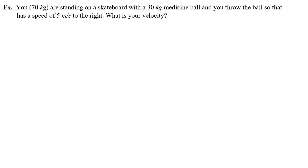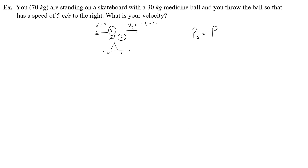Let's try a problem. You are standing on a skateboard with a 30 kilogram medicine ball and you throw the ball so that it has a speed of 5 meters per second to the right. What is your velocity? You are standing on the skateboard — here's the medicine ball. We'll call the medicine ball thing 2 and you thing 1. The medicine ball has a velocity of positive 5 meters per second to the right. If you and the skateboard are standing still in the beginning, you have zero momentum in the beginning.